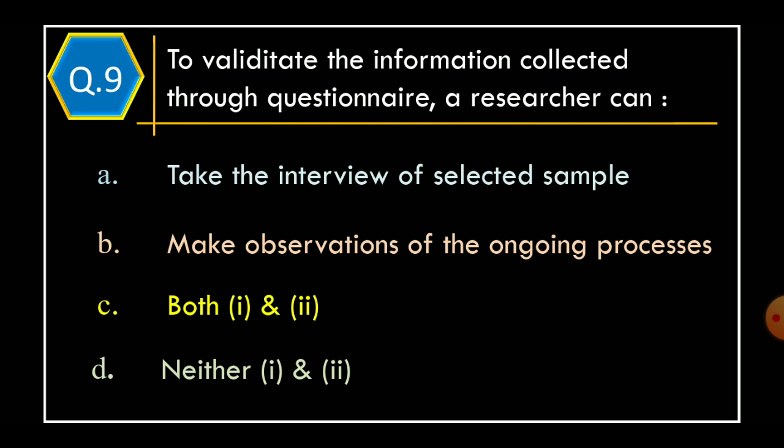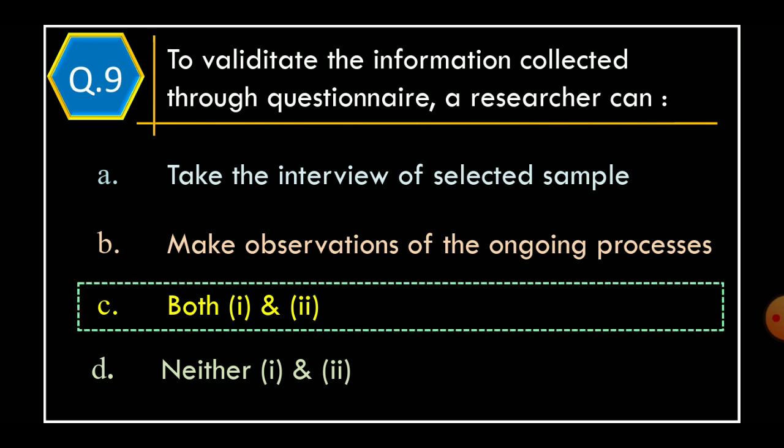Question 9. To validate the information collected through questionnaire, a researcher can: Option A, Take the interview of selected sample. Option B, Make observations of the ongoing processes. Option C, Both Option A and Option B. Option D, Neither Option A nor Option B. And correct option is Option C, Both Option A and Option B.